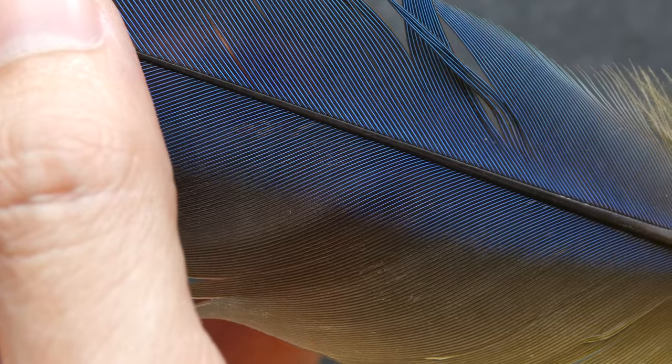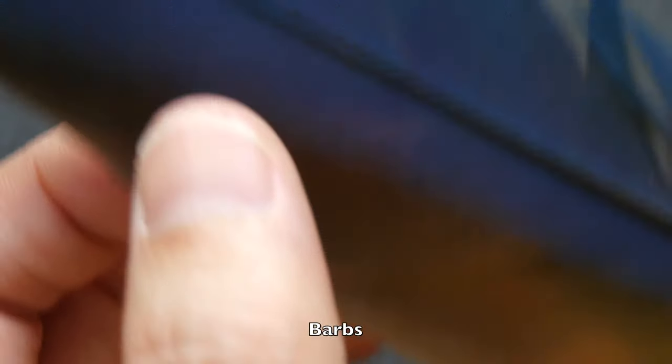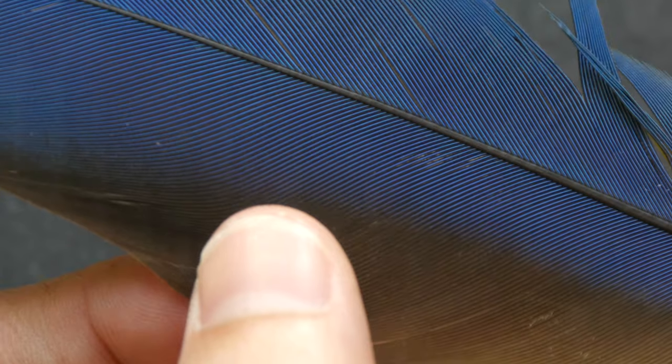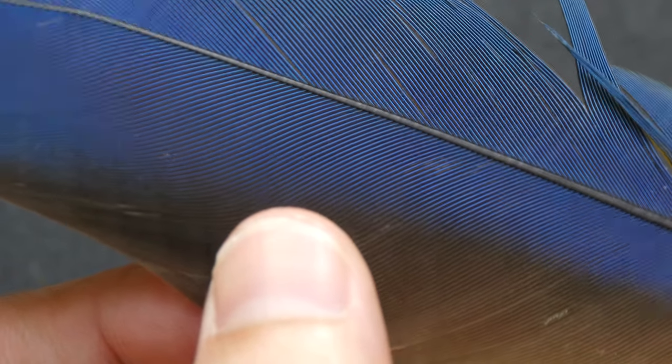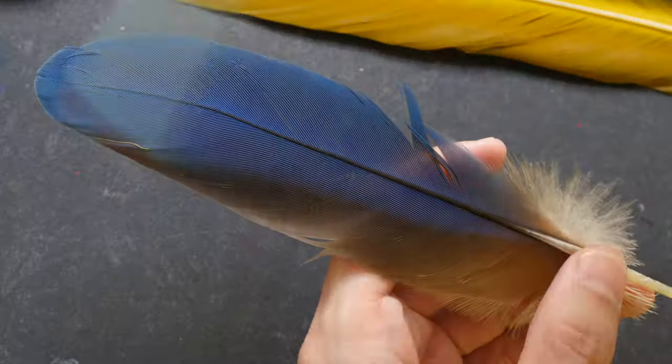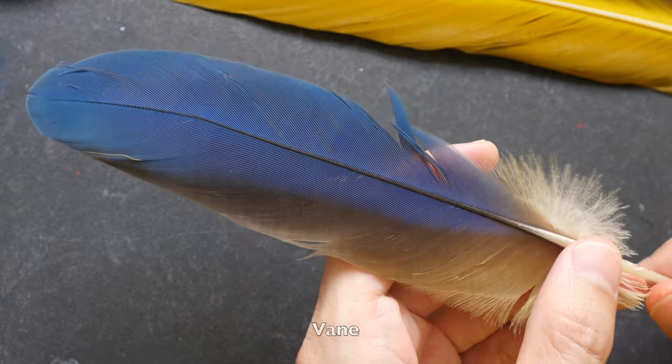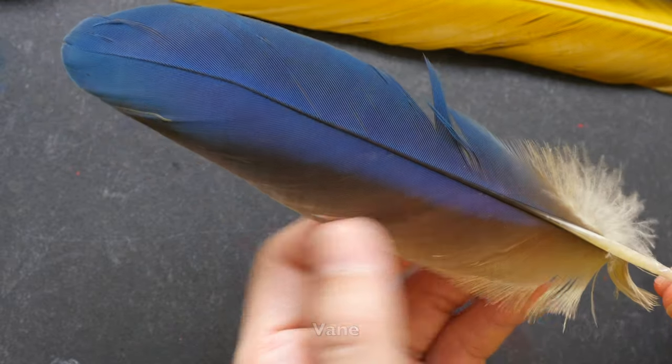All these lines that extend from the shaft are called the barbs, and you can see the feather, they sort of stick together. So this whole part, this big piece here, is called the vane. On this side we have blue and some yellow or brown.